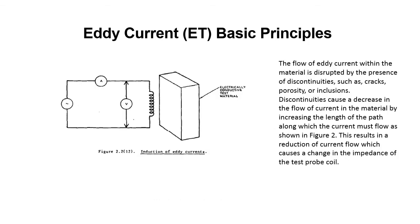Eddy Current Testing Basic Principles. The flow of Eddy Current within the material is disrupted by the presence of discontinuities such as cracks, porosity, or inclusions. Discontinuities cause a decrease in the flow of current in the material by increasing the length of the path along which the current must flow, as shown in Figure 2. This results in a reduction of current flow which causes a change in the impedance of the test probe coil.